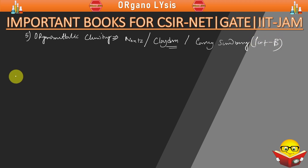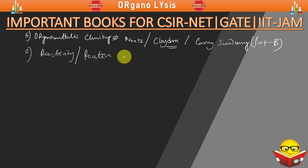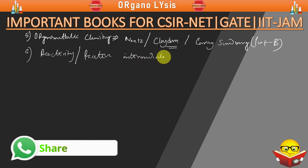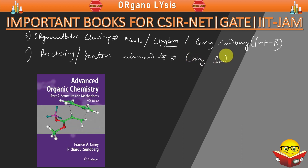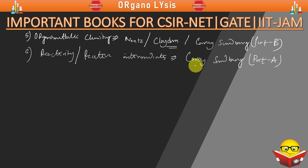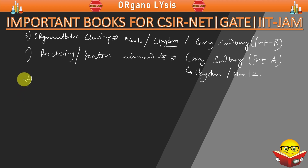If you want to know reactivity or reactive intermediates, you should refer Clayden, Nance, or Carey-Sundberg Part A. Carey-Sundberg Part A contains lots of material on reactivity and is very important for reactivity, reaction mechanism, and reactive intermediates. You can also refer Clayden and sometimes Nance as well.